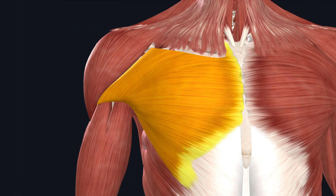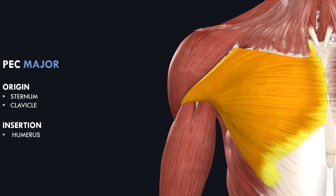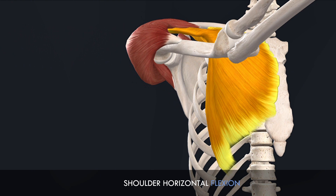Now let's look at the pec major. The pec major attaches on the humerus at one end, and at various points along the sternum and clavicle at the other end. Because the sternal and clavicular attachment sites are closer to the midline, these are considered the origin. Because the humerus attachment site is further from the midline of the body, this is considered the insertion. The pec major differs from the biceps in that the fibers span in various different directions, meaning it produces multiple different movements which emphasize different fibers. However, the primary movements it contributes to are shoulder flexion and horizontal shoulder flexion.